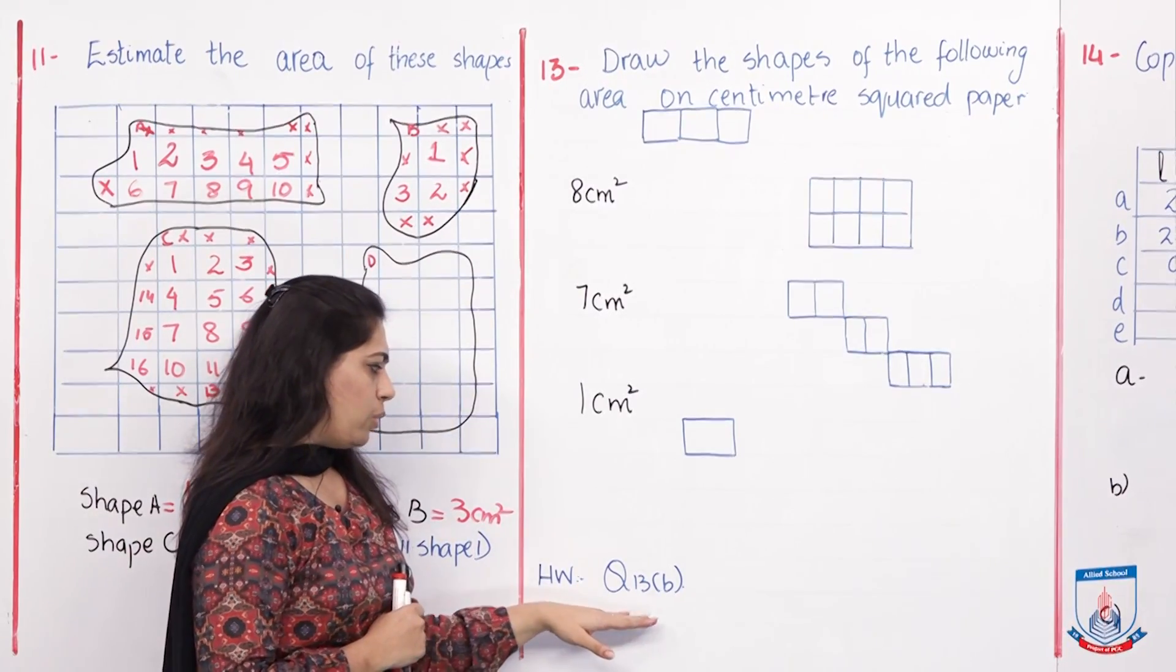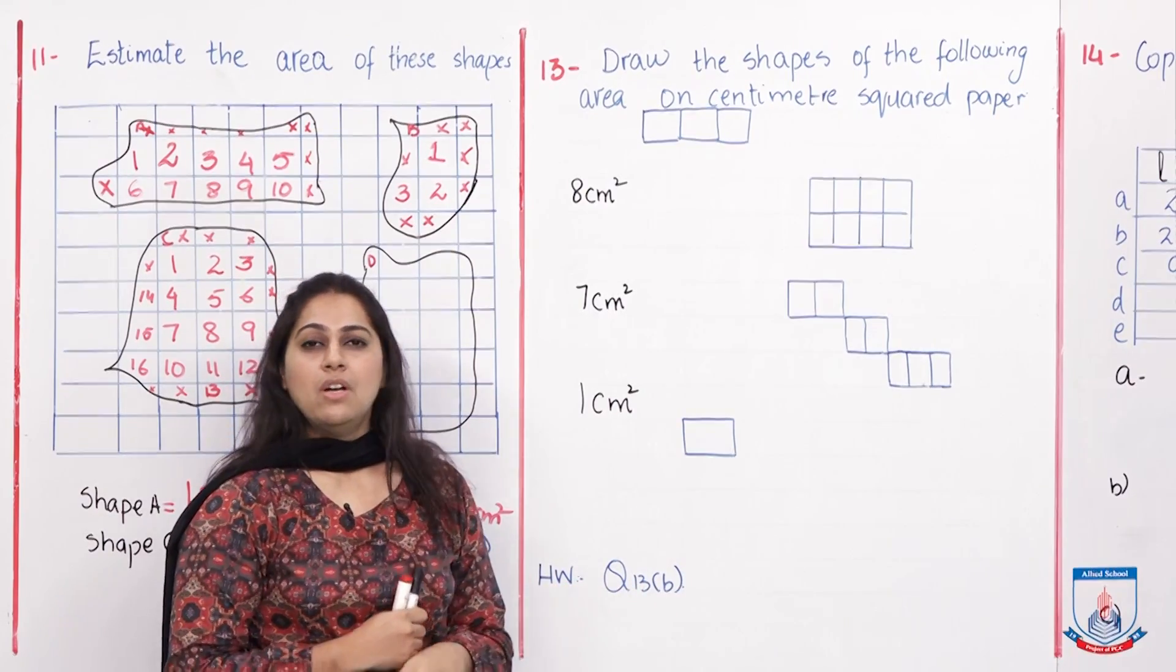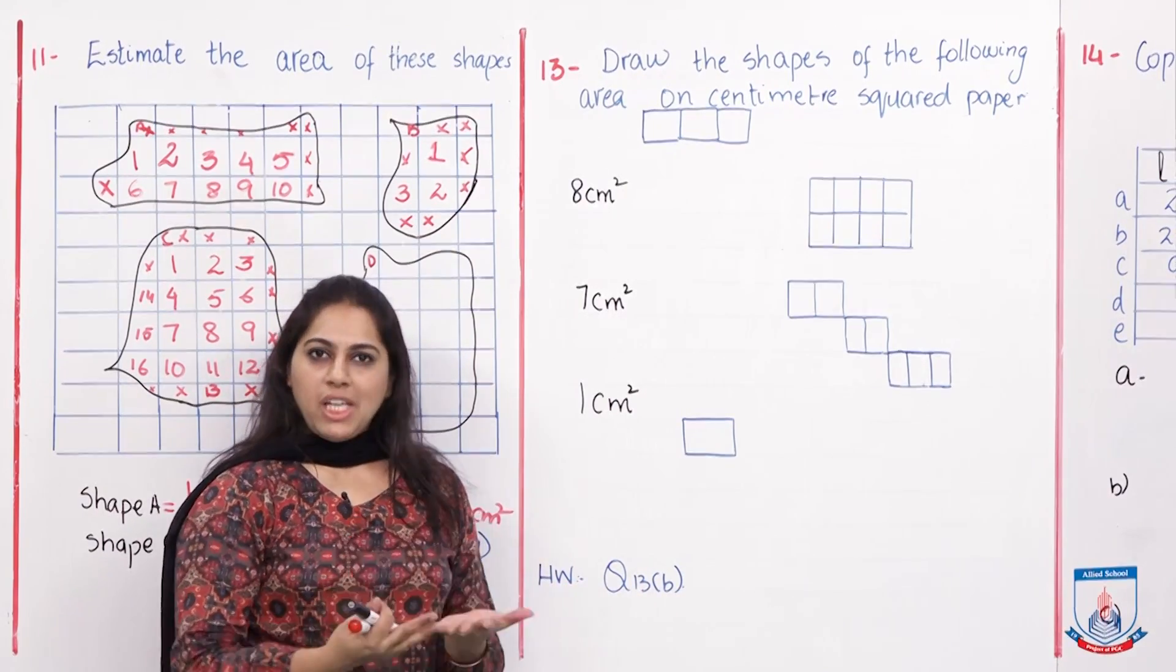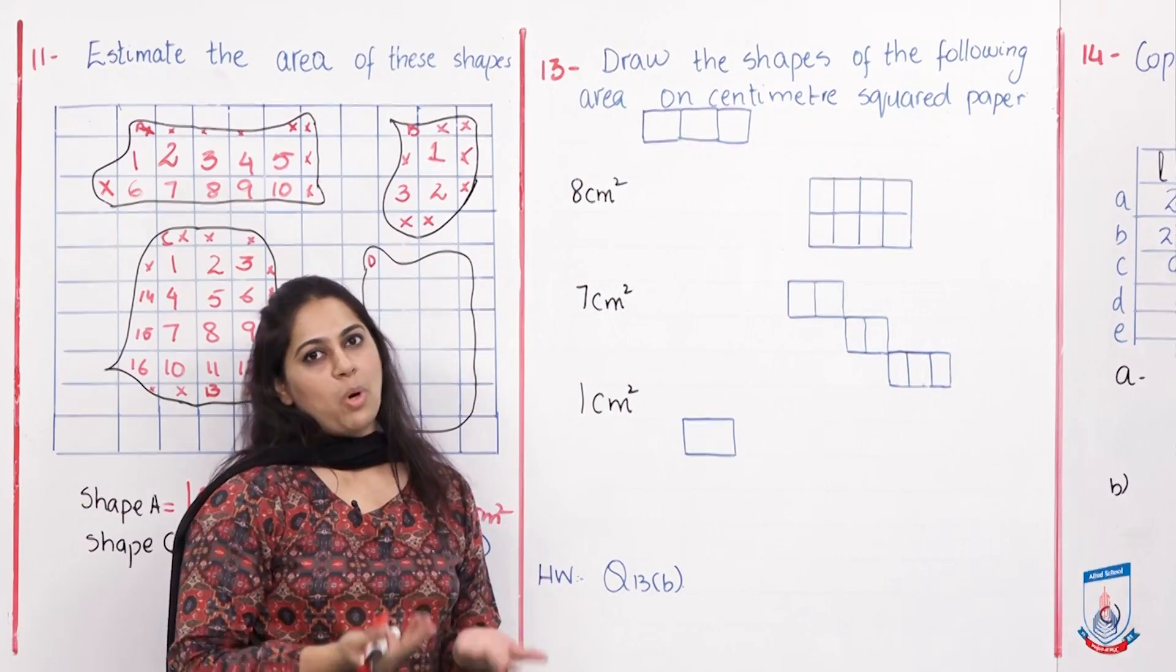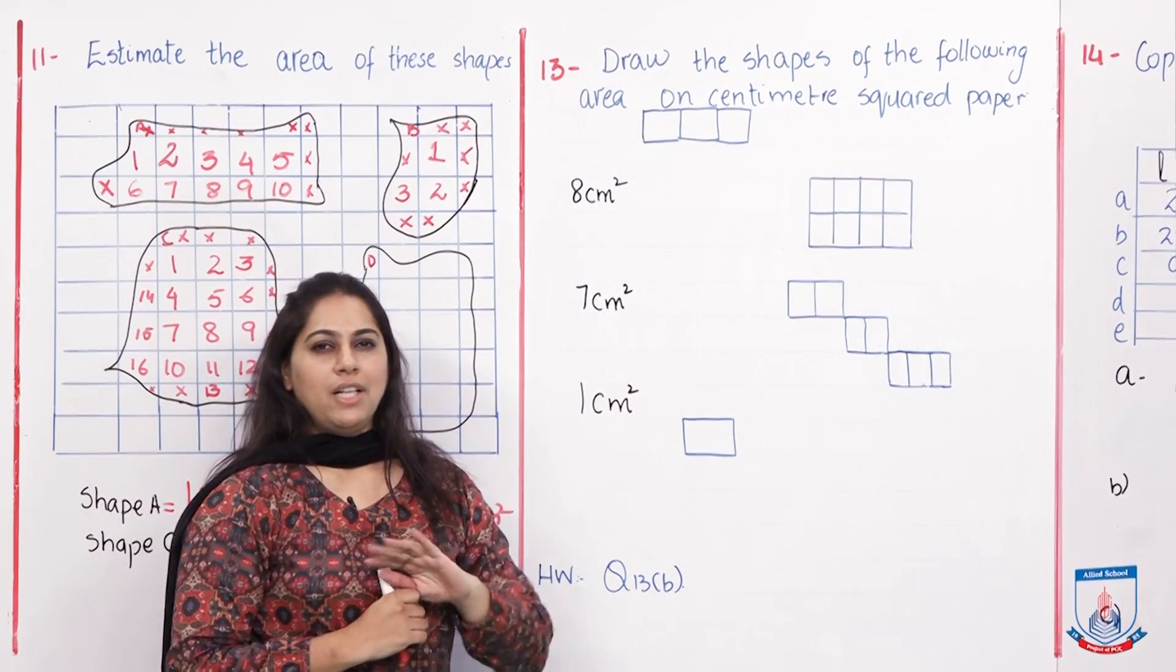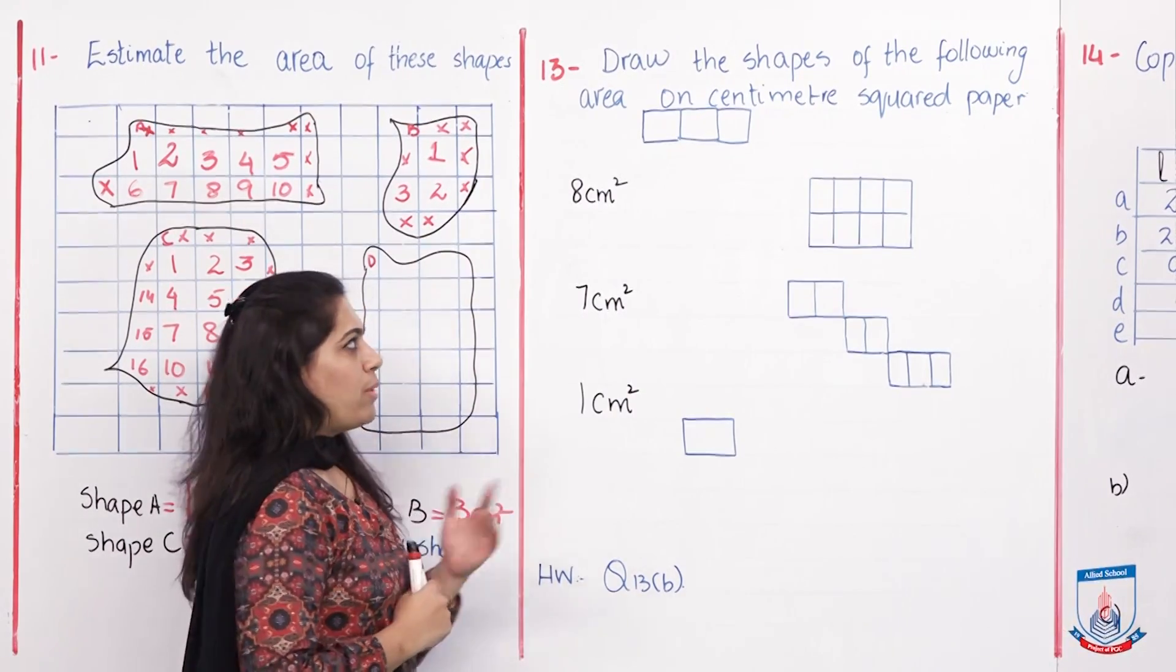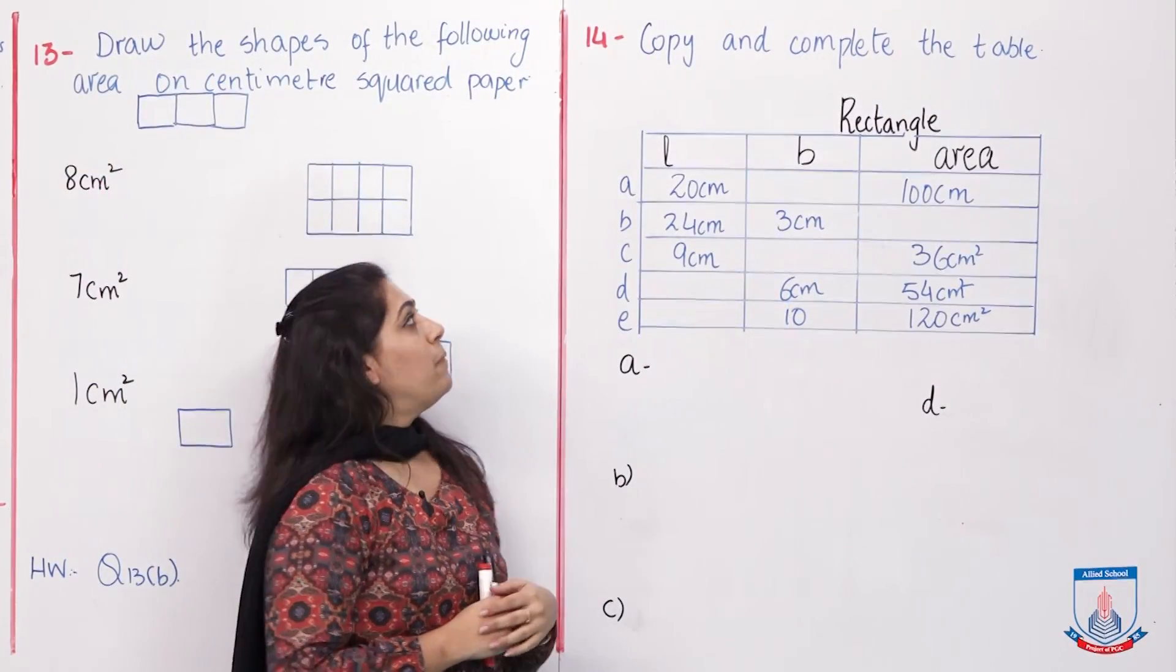With this, your homework will be question number 13, part B, which is 9 centimeter. So it's up to you, be creative, and in 9 centimeter you can make a very beautiful shape. Let's go to the different question, which is on board 4.